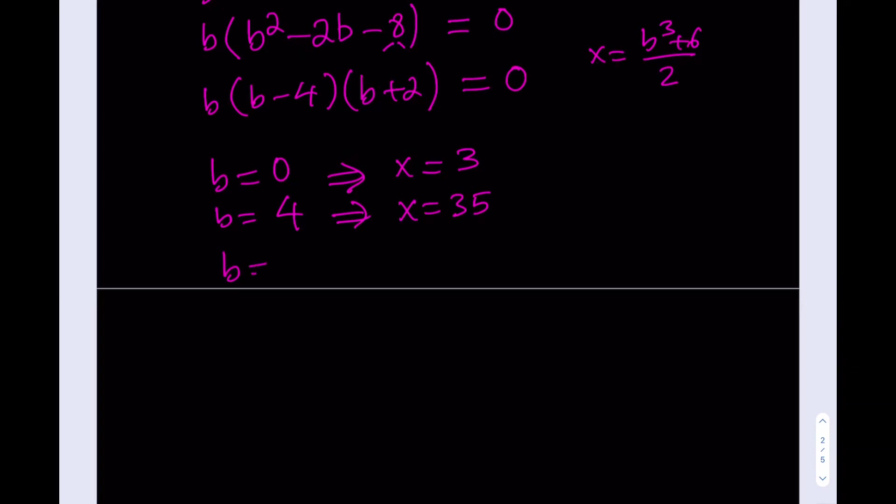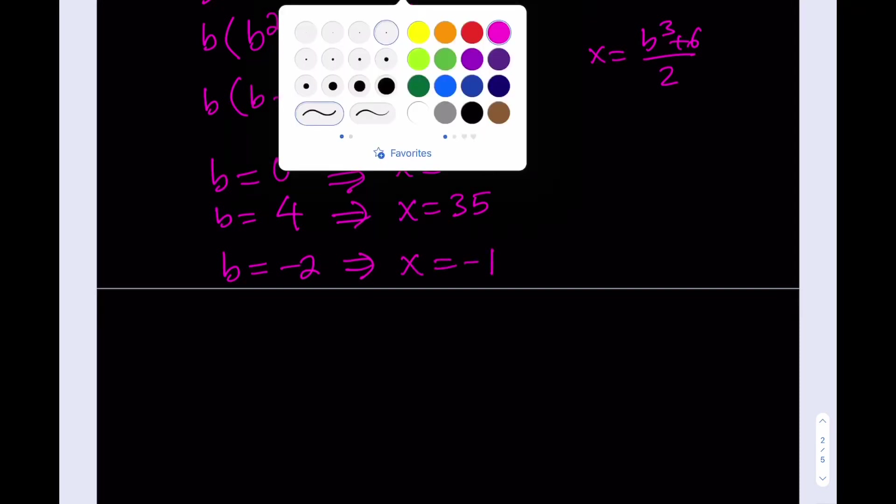And then, if B equals negative 2, as you know from here, then we get negative 2 cubed, which is equal to negative 8 plus 6 is negative 2 divided by 2 is negative 1. So, these are all the solutions and we are done.